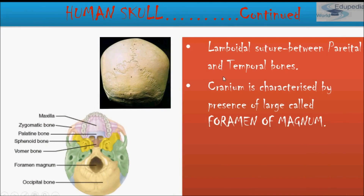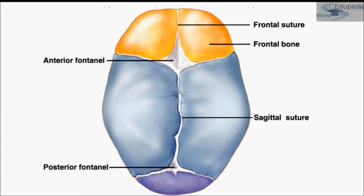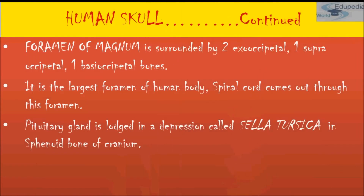The cranium has a distinguishing feature called the foramen magnum, from where the vertebral column — that is your spinal cord — emerges out. The foramen magnum is surrounded by 2 exooccipital, 1 supraoccipital, and 1 basioccipital bones. It is the largest foramen of the body because the spinal cord comes out through it.